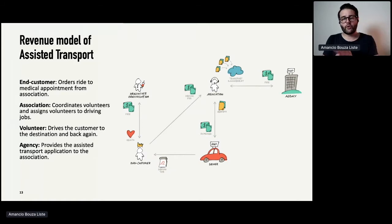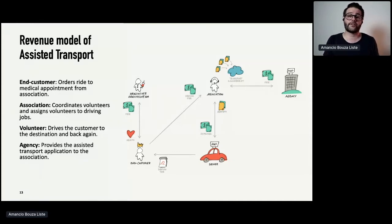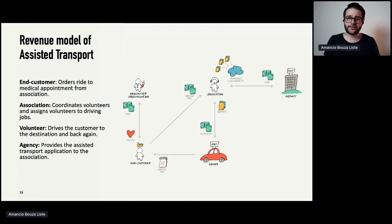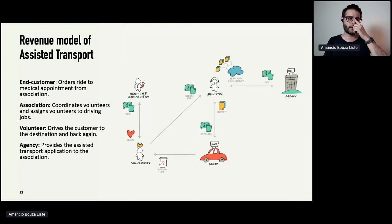The association coordinates volunteers and decides who will drive the customer. The driver takes the customer to the doctor and then has to fill out a report: how much was the distance from the customer's home to the doctor and back, and how much time it took — just for reimbursement of things like gasoline, since drivers don't receive payment, just personal reimbursement for expenses. The association then takes all these reports and enters them into a financial booking application provided by an agency.